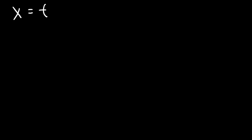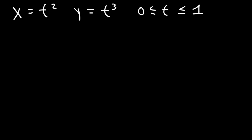Now let's move on to the next problem. Let's say that x is equal to t squared and y is equal to t cubed. We want to find the surface area on the interval 0 to 1, and this time we want it to be rotated about the y-axis as opposed to the x-axis.